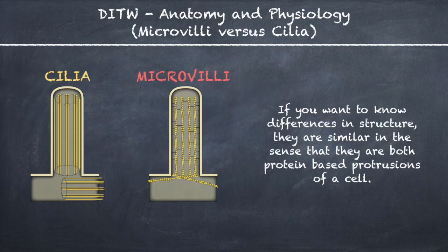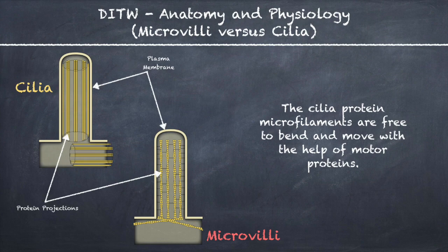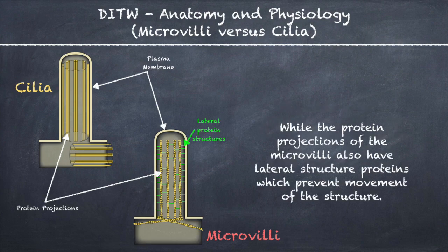If you want to know differences in structure, they are similar in the sense that they are both protein-based protrusions of a cell. The cilia protein microfilaments are free to bend and move with the help of motor proteins, while the protein projections of the microvilli also have lateral structure proteins which prevent movement or destruction.